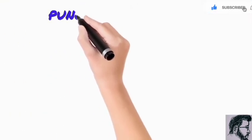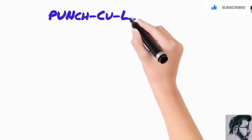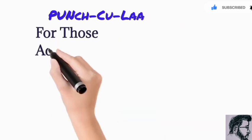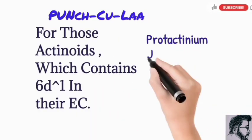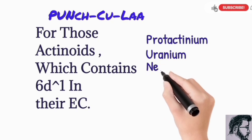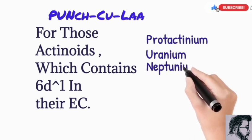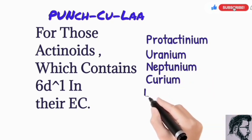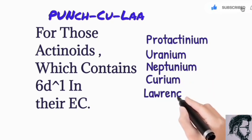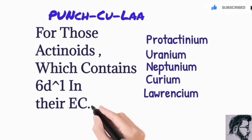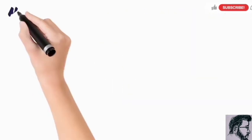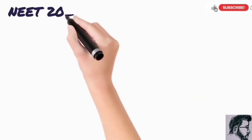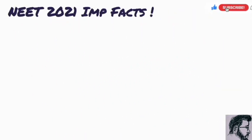The next trick regarding actinoids is 'Panchkula' — which is a place in Haryana. This trick helps you remember those actinoid members which contain 6d¹ in their outermost electronic configuration. The letters stand for: Pu (protactinium), U (uranium), N (neptunium), Ku (curium), and La (lawrencium). So 'Panchkula' helps you remember those actinoids which contain 6d¹ in their outermost electronic configuration.